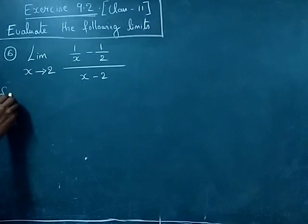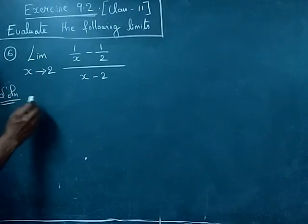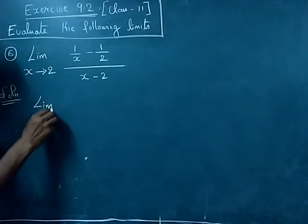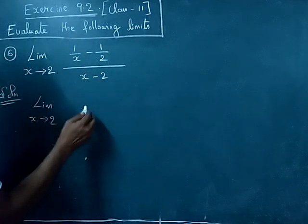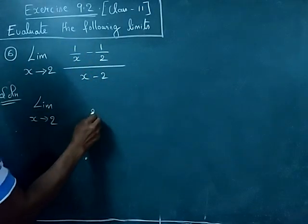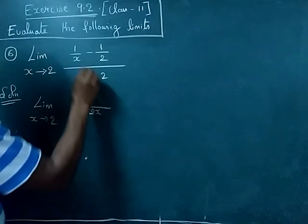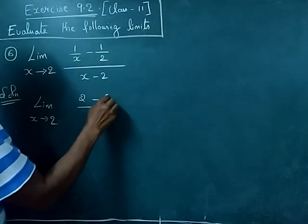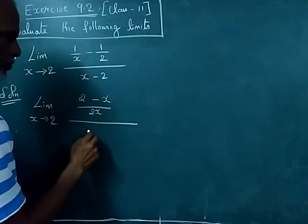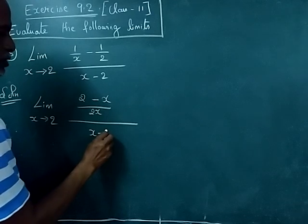Solution: limit x tends to 2. You take the LCM for the numerator, 2 into x is the LCM. 2 into 1 is 2, minus x into 1 is x, divided by x minus 2.